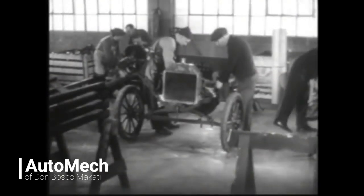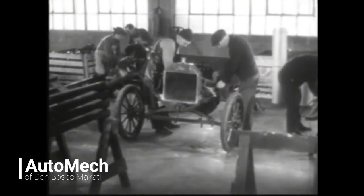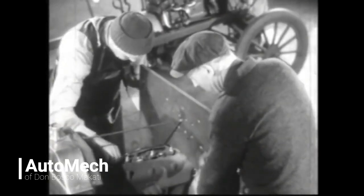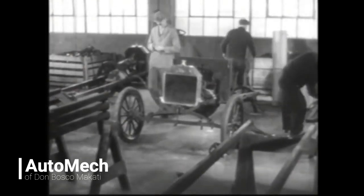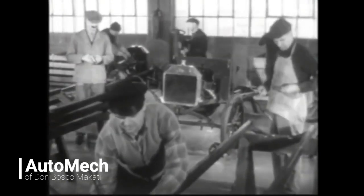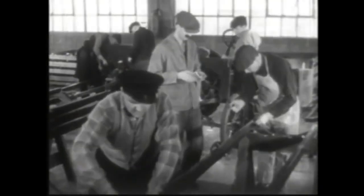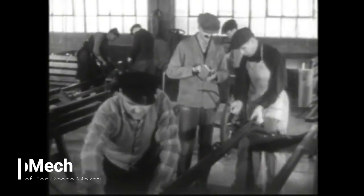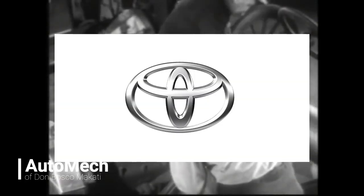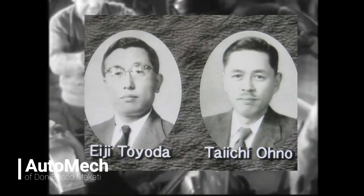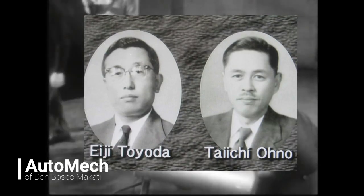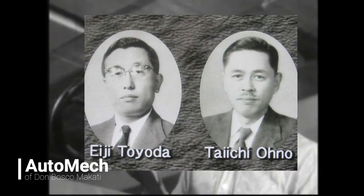The assembly line of production was introduced way back in the early 1900s by Henry Ford during the production of his mass-produced Ford Model T. However, despite the assembly line being modeled by most industries during that time, Toyota, under the supervision of AG Toyota and Taichi Ono, reinvented the assembly line as they saw that there was a lot of waste being produced during the manufacturing and production process. Hence, the 5S methodology was implemented, which led to an increase in productivity.